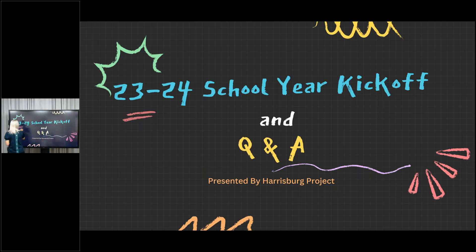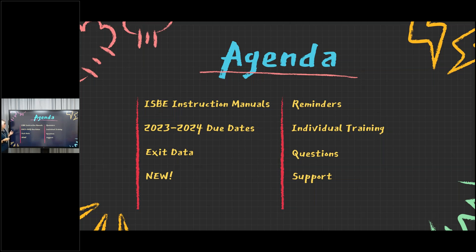We'll go ahead and get started. Today we're going to talk about our instructions and where you can find those when they're released. Some documents show the 23-24 due dates, not only released from ISBE but from us as well. We have something that's just about I-Star dates that doesn't include SIS and other things — it's more focused on due dates in our system. We'll talk about exit data, and something that is new in I-Star that I know everyone is very excited about. We'll go over reminders for this time of year and how you can get individual training. If you're new — or even if you're not new — and you need some one-to-one help, you can register for a training with me and we can do that via Zoom.